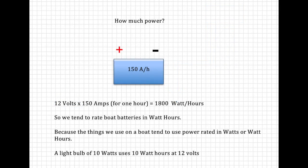So let's go back to our question. How much power is in our battery? Let's take our 12 volt battery again. 12 volts times 150 amps for one hour equals 1800 watts or watt hours. So we tend to rate boat batteries in watt hours. And there's another reason for that which I'll go into later. Because the things we use on a boat tend to use power rated in watts or watt hours. It's much easier to work in watt hours. Therefore a light bulb of 10 watts uses 10 watt hours at 12 volts.